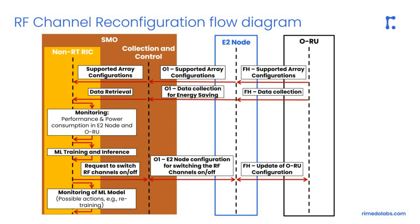This request is sent through the O1 interface to the E2 node and then transferred through the open fronthaul interface to the open radio unit. The performance of the machine learning model must be constantly monitored, and in case of its degradation, proper actions must be taken, such as retraining of the model.